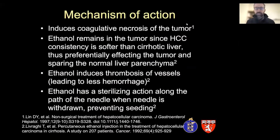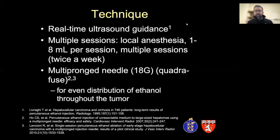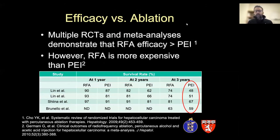Ethanol injections were first introduced in the late 1980s to early 1990s. The mechanism of action is induction of coagulative necrosis of the tumor. Ethanol remains in the tumor since HCC consistency is softer than the cirrhotic liver. It also induces thrombosis of vessels and can have a sterilizing action as the needle is withdrawn, preventing seeding. The technique requires real-time ultrasound guidance, typically multiple sessions under local anesthesia, one to eight mL of ethanol per session — sometimes up to two sessions per week. A multi-pronged needle known as Quadrifuse allows even distribution of ethanol throughout the tumor.